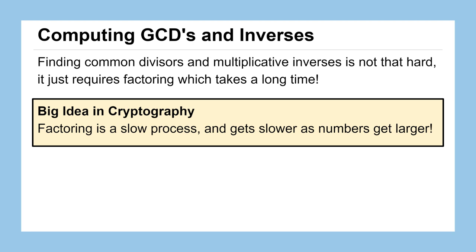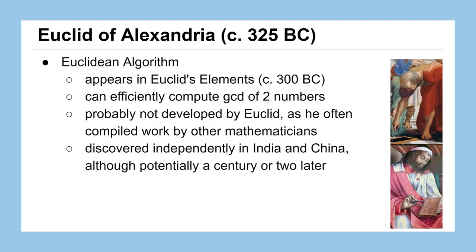Factoring is a slow process and it only gets slower as numbers get bigger and bigger. If a number is twice as large it might actually take more than twice the time to factor that new number. Luckily there's some nice mathematics that have made factoring a little bit faster, and this piece of mathematics comes from Euclid.